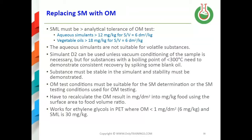When using simulants for volatile substances, you essentially evaporate them to dryness and would lose the volatile substances, so you won't get a reasonable representation of a specific migration limit. It's acceptable for overall migration but not for specific migration. Simulant D2 can be used with less vacuum conditioning, which may be necessary for polyamides, but for substances with a boiling point of less than 300 degrees centigrade you need to demonstrate consistent recovery by spiking some blank oil. The substance must be stable in the simulant and stability must be demonstrated.